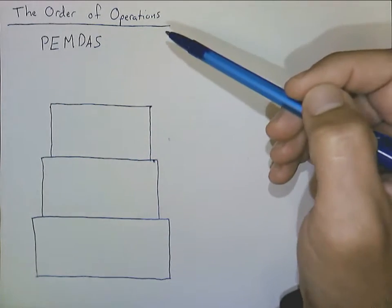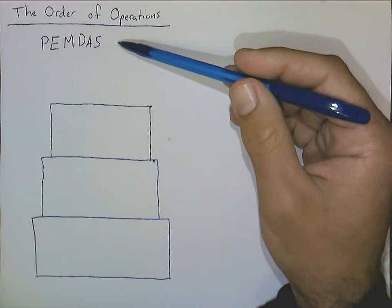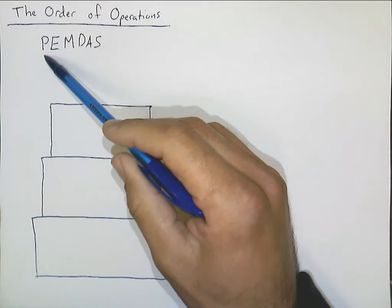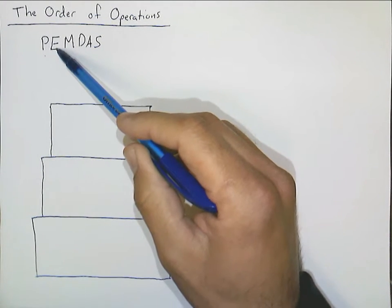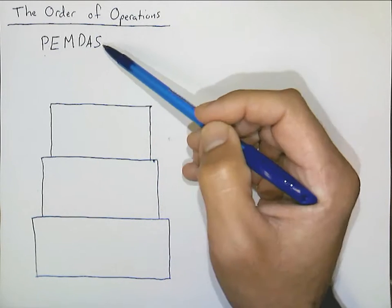Most of you should know by now through some memorization device or another. The common one that I always hear is PEMDAS, where P stands for parentheses, E stands for exponents, M is multiplication, D is division, A is addition, S is subtraction.